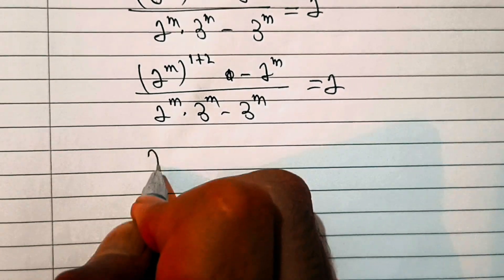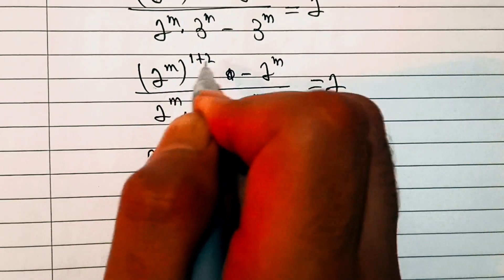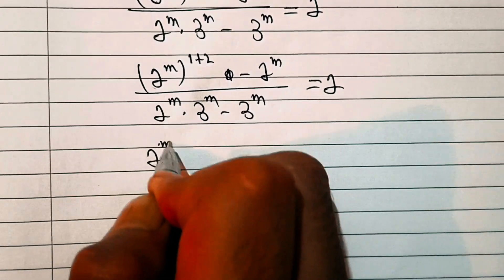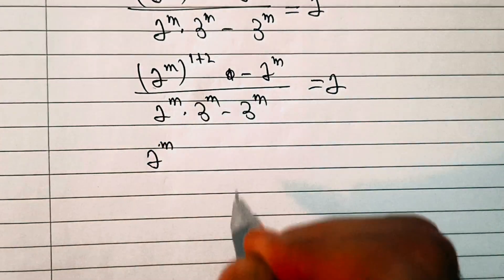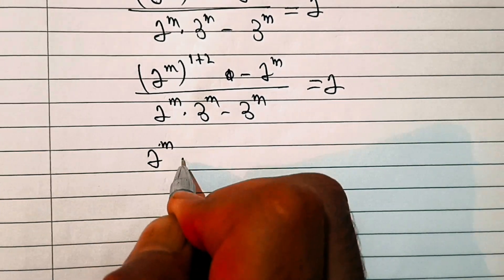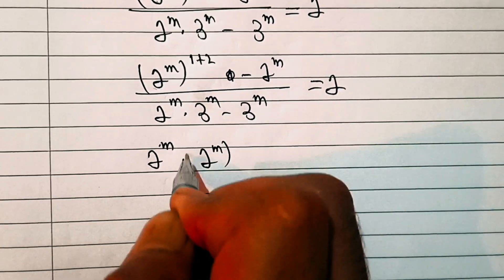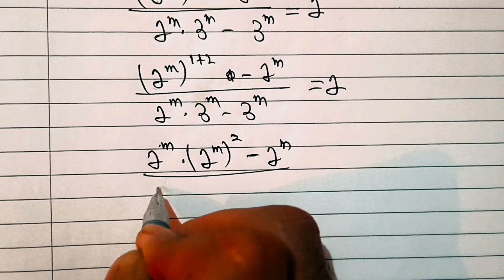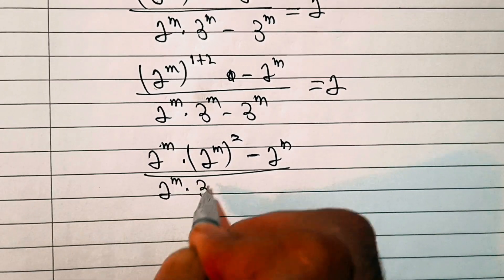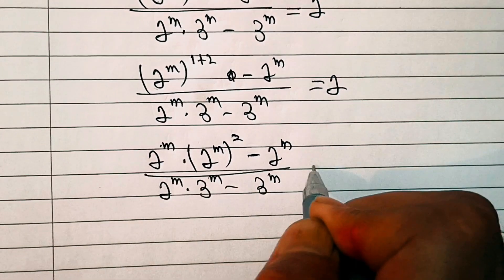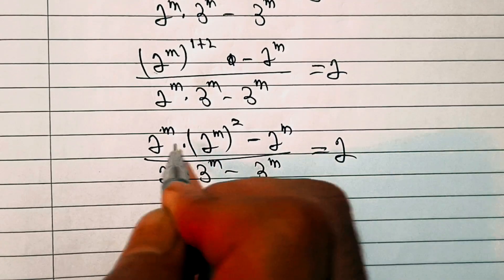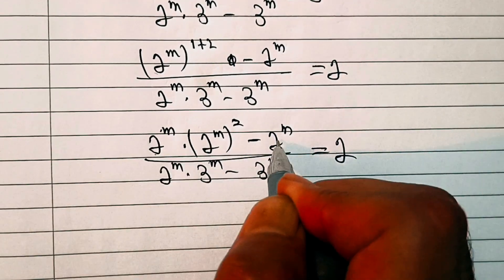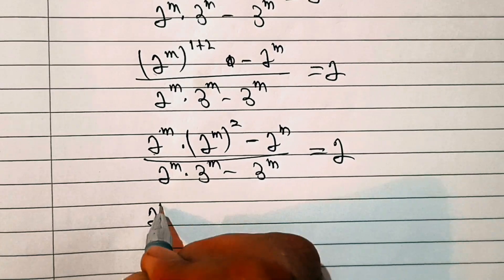Since a^(m+n) = a^m · a^n, we can write (2^m)^(1+2) as (2^m)^1 · (2^m)^2, which equals 2^m · (2^m)^2 minus 2^m, all over 2^m · 3^m minus 3^m, equal to 2. Now from the numerator we have 2^m appearing twice, so let's take it as a common factor.